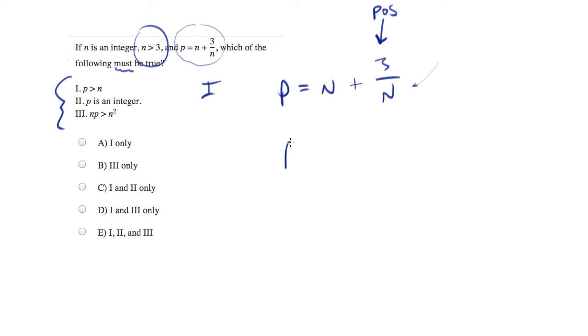So what we're saying here is P is equal to N plus something positive. Which means P will always be greater than N, because I took N and I added something to it. So the first statement is always true.